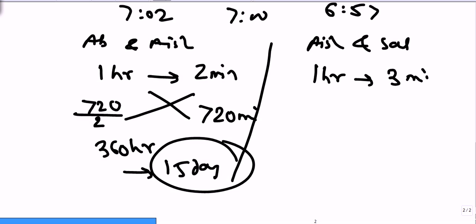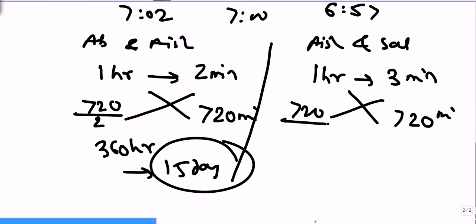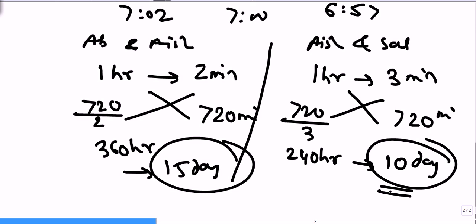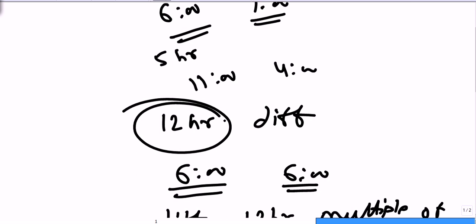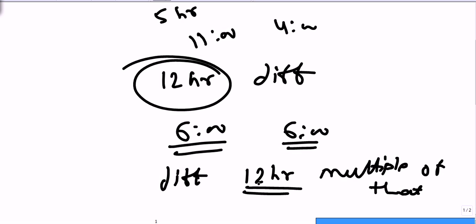Now let's check between Ashwarya and Salman. In one hour, the difference between their watches is three minutes. We need the difference to be twelve hours, that is 720 minutes. So 720 divided by 3 equals 240 hours, which is ten days. After every ten days, Salman and Ashwarya's watches will show the same time — though Ashwarya will show twelve hours more than Salman, practically the time shown will always be the same. So what we've seen is: if we want watches to show the same time, the difference must always be a multiple of twelve hours.